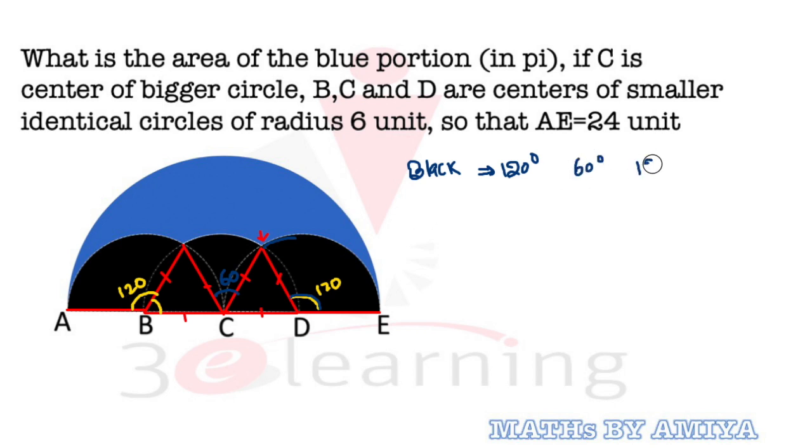This region is nothing but 120 degree ka ek sector hai. With all the radius are nothing but six units. Sabha radius six hai. And we have two equilateral triangles.